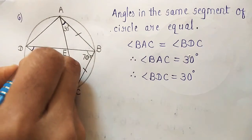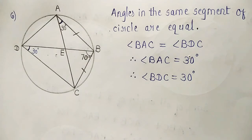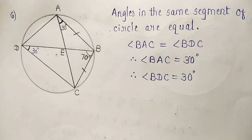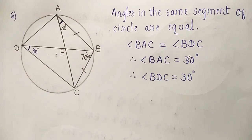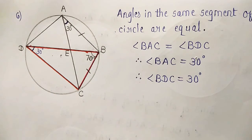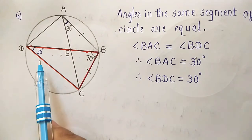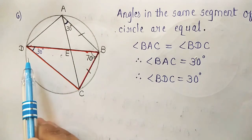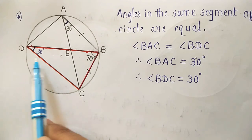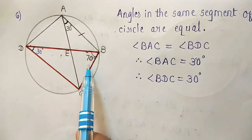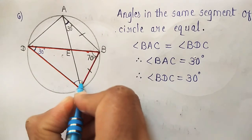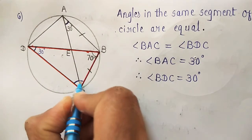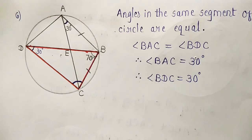Now let us refer to triangle BCD. In this triangle, we have angle BDC as 30 degrees and angle DBC as 70 degrees. We can find angle BCD by applying the angle sum property of a triangle.